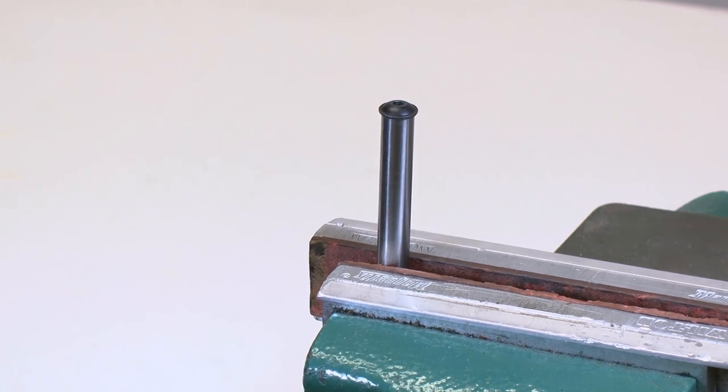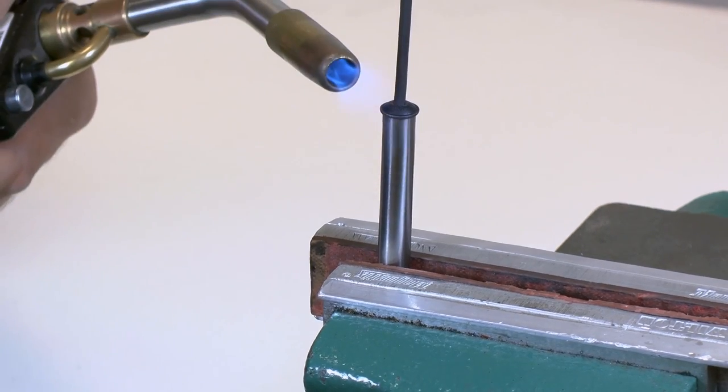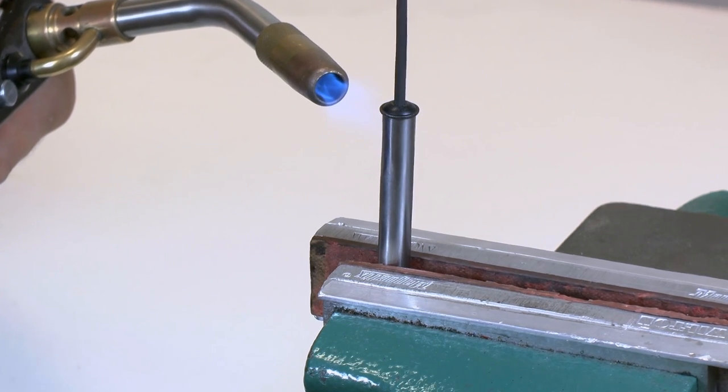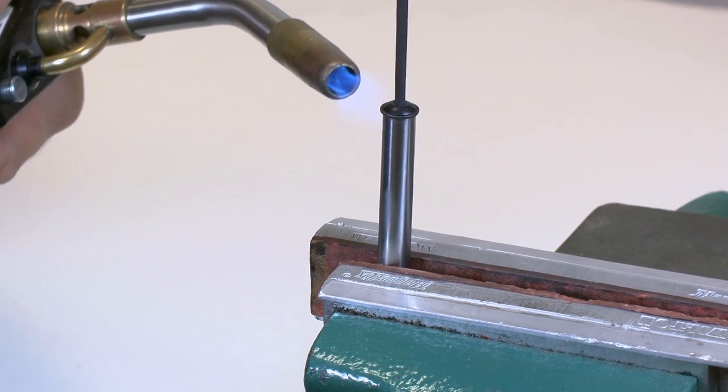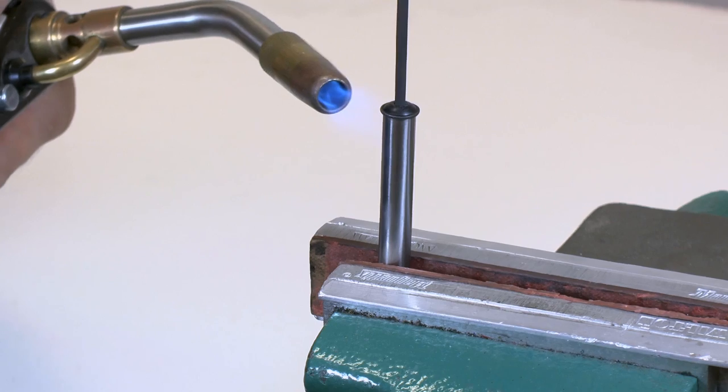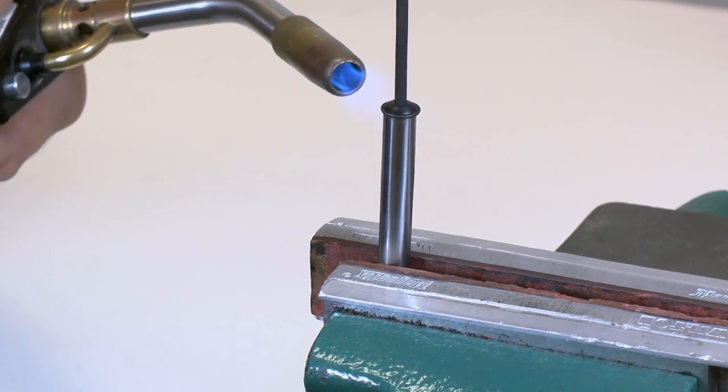Now, you'll need to break down the thread locker securing the guide rod screw. Use a propane torch or powerful heat gun on the screw while applying pressure with an Allen wrench until the thread locker yields.